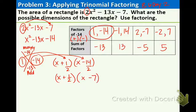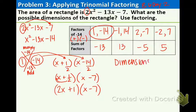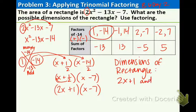Sliding, check. Dividing, check. Bottoms up. Bottoms up means take the number in the bottom and put it in front of a variable. So we have 2x plus 1 times x minus 7. And that is the answer. They asked for the dimensions, so we can write dimensions of rectangle are 2x plus 1 and x minus 7.